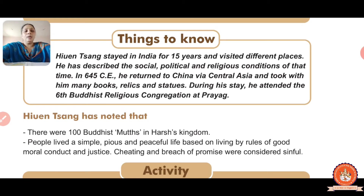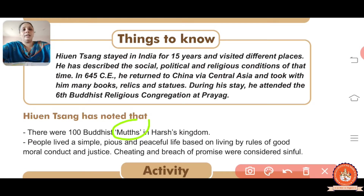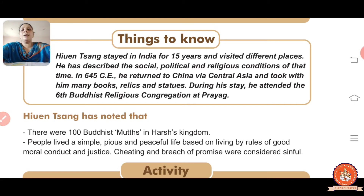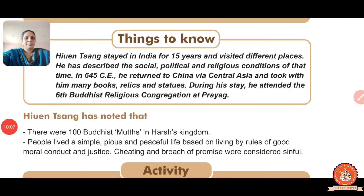Xuanzang noted there were a hundred Buddhist Mathas. The meaning of Mathas is historical establishments identified by surnames. People lived a simple and peaceful life based on the rule of good moral conduct and justice.